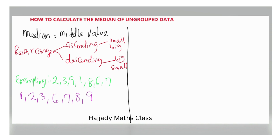The technique is canceling from both sides. We cancel the first value on the left-hand side and the value on the right-hand side simultaneously. Then we move to the next one and cancel, then the next one and cancel, until we are left with a single value at the middle. That middle value is our median.